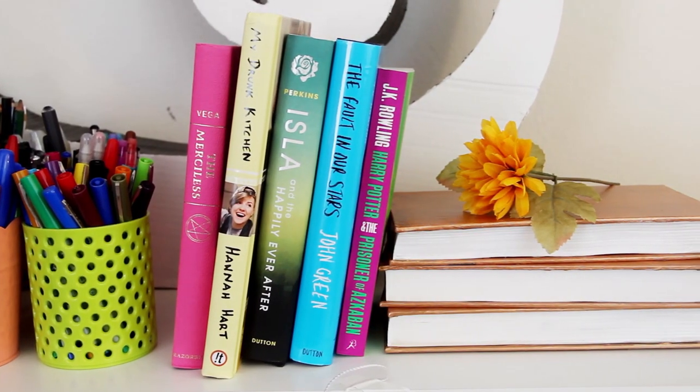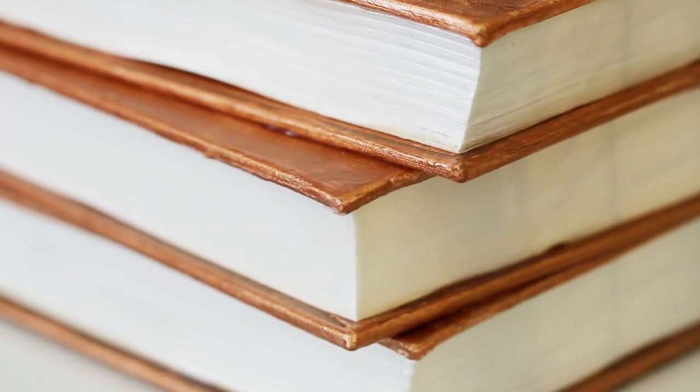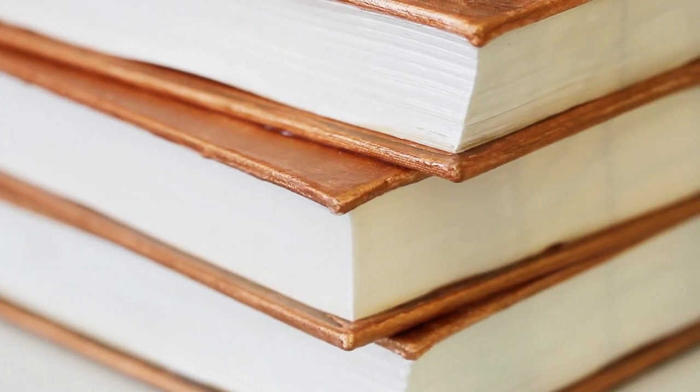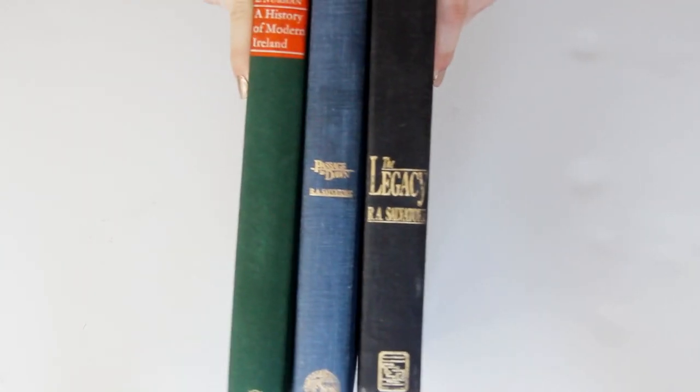And if you don't need a doorstop this could also be used as a bookend. Now there are so many ways to make a doorstop and you could literally use any heavy object. But I decided to make mine look like a stack of books. And the way I did that was by actually painting and gluing together a stack of books.